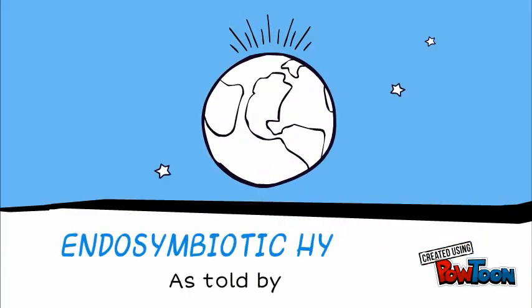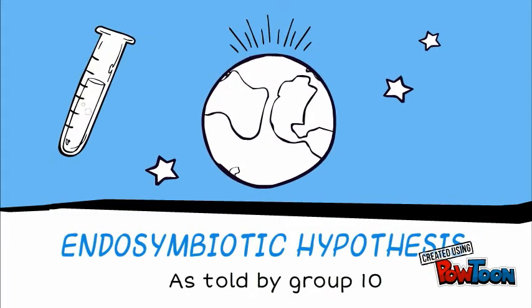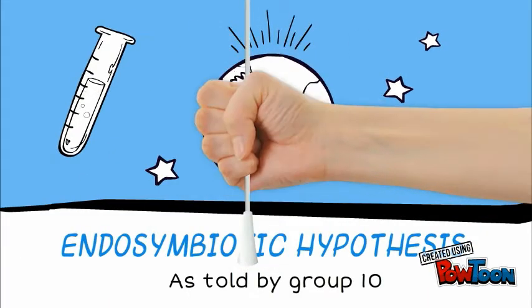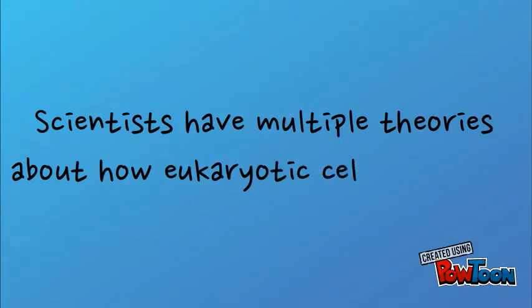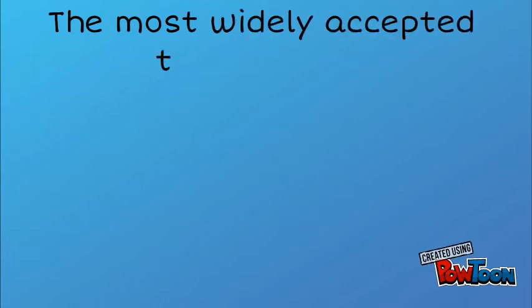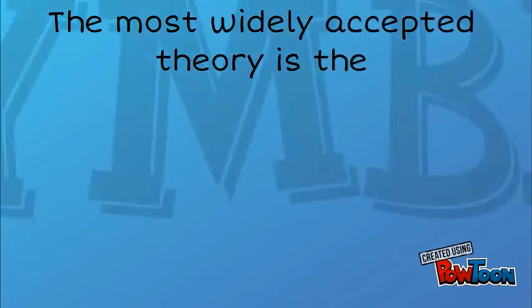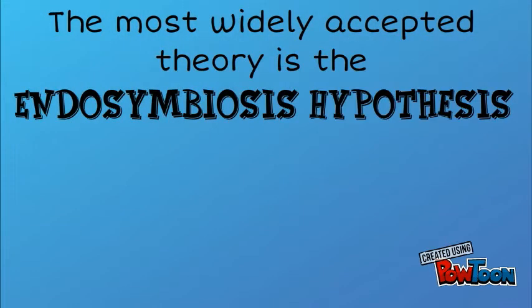Endosymbiotic Hypothesis, as told by Group 10. There are multiple theories as to how eukaryotic cells develop. The most widely accepted theory is the endosymbiosis hypothesis.